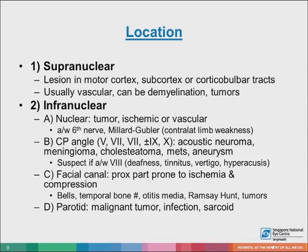Depending on the location of the lesion: if it is a supranuclear lesion, the cause is usually stroke, tumor, or multiple sclerosis. If it is an infranuclear lesion, the lesion can be nuclear, at the CP angle, or in the facial canal. In the nuclear, affecting the pons, you may get Millard-Gubler syndrome, which is associated with sixth nerve palsy and contralateral limb weakness from the affected corticospinal tract.